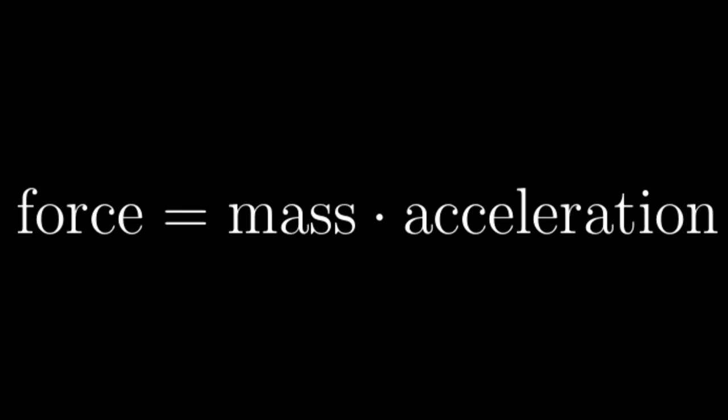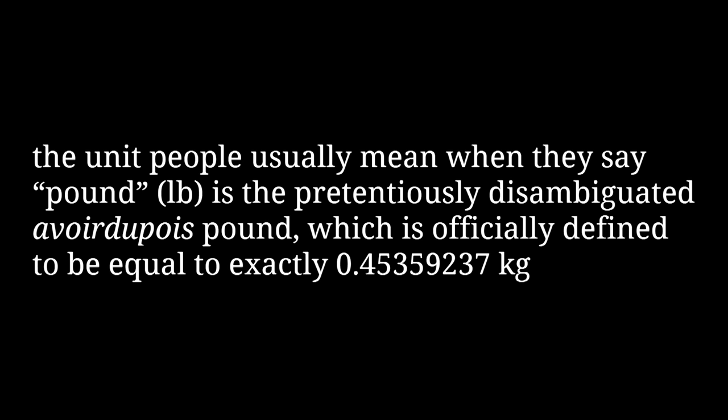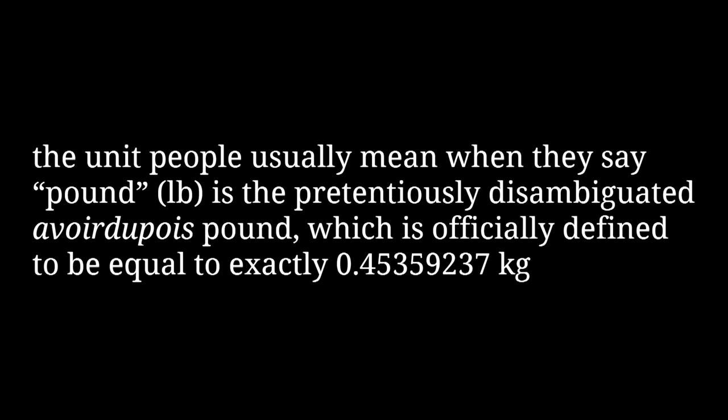That statement 'force equals mass times acceleration' doesn't really mean that force has to be derived by multiplying mass by acceleration, right? I mean, you could just as easily say that mass equals force divided by acceleration. The poundal isn't actually the most common FPS unit of force. While a pound is usually used as a unit of mass, there's another unit that's also called a pound that's actually a unit of force. If something has a mass of one pound, then the gravitational force between it and the earth is one pound of force. That's what it means for something to weigh one pound on earth.